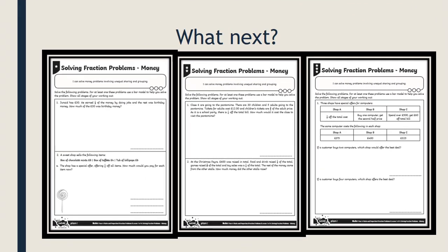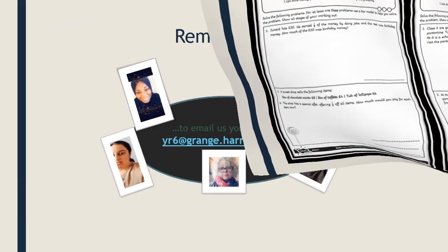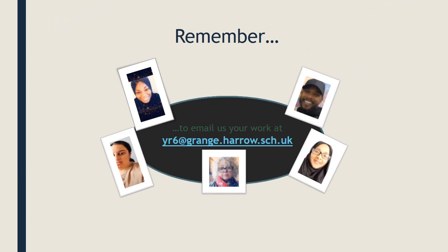Now I'd like you to look at the email that was sent to you this morning. You're going to be focusing on money but doing exactly the same thinking about the parts and whole model to help you solve problems. There are three worksheets so you can choose your level of difficulty. Remember: with ratio, whatever you do to one side you do to the other, and when you put the numbers together they reflect the whole. Any questions, email us at the address shown on screen. We look forward to seeing your work — have a great day, bye!